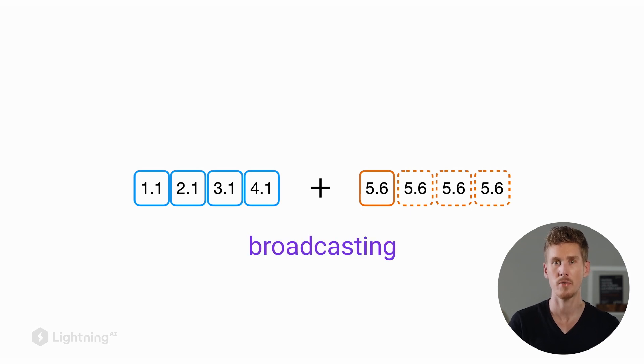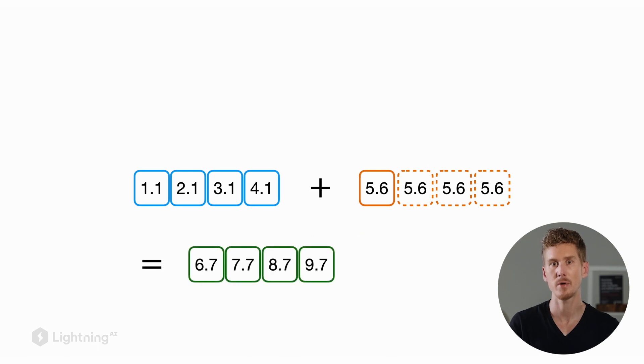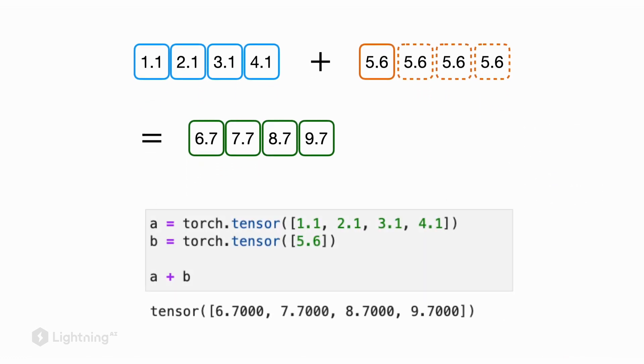As a result in PyTorch, when we add a number to a vector, the output will be a vector where the same number is added to each element in the input vector. Here at the bottom you can see how that actually looks like in PyTorch and you can see that this actually works.